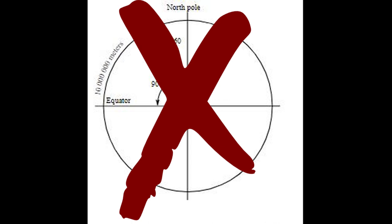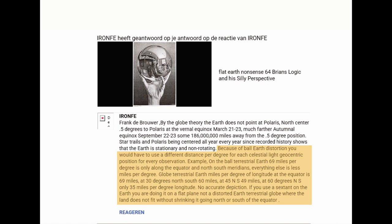The thread started like this. Setting aside the 'ball stationary and non-rotating' claim, he goes on: 'Because of ball earth distortion, you would have to use a different distance per degree for each celestial light geocentric position for every observation. On a ball earth, 69 miles per degree is only along the equator and north-south meridians. Everything else is less miles per degree. Globe terrestrial earth miles per degree of longitude: at the equator is 69 miles, at 30 degrees north/south 60 miles, at 45 degrees north/south 49 miles.'